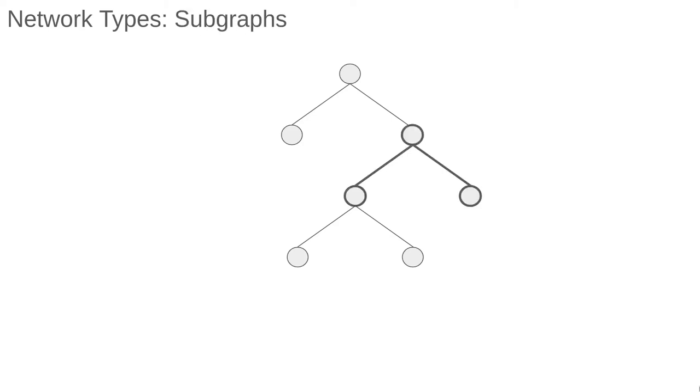The first is the idea of the subgraph or subnetwork. This is simply a subset of the nodes and edges of the original network, such that we only have edges between nodes in the subset. So the highlighted edges and nodes are not a valid subgraph because the edges are left dangling, they don't have any vertex to connect to within the subset.